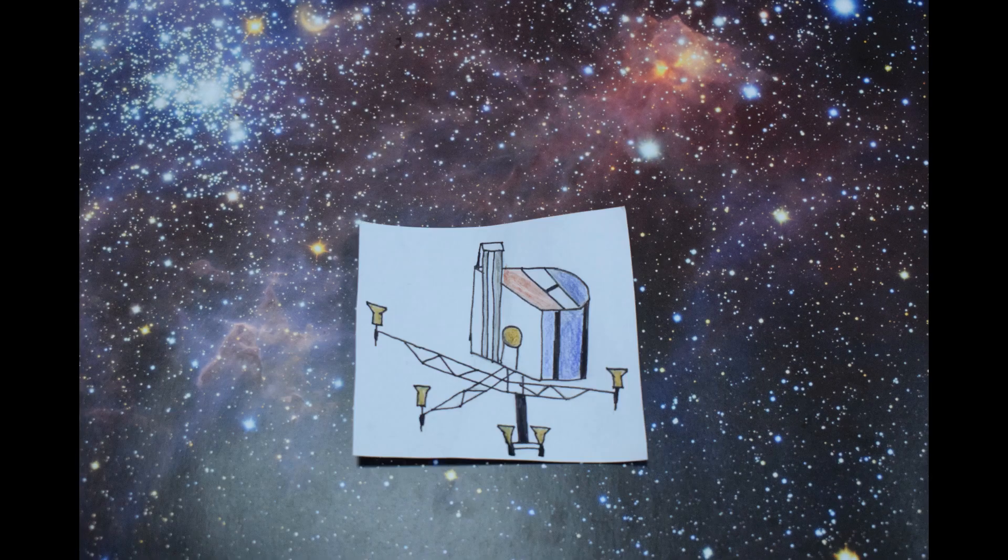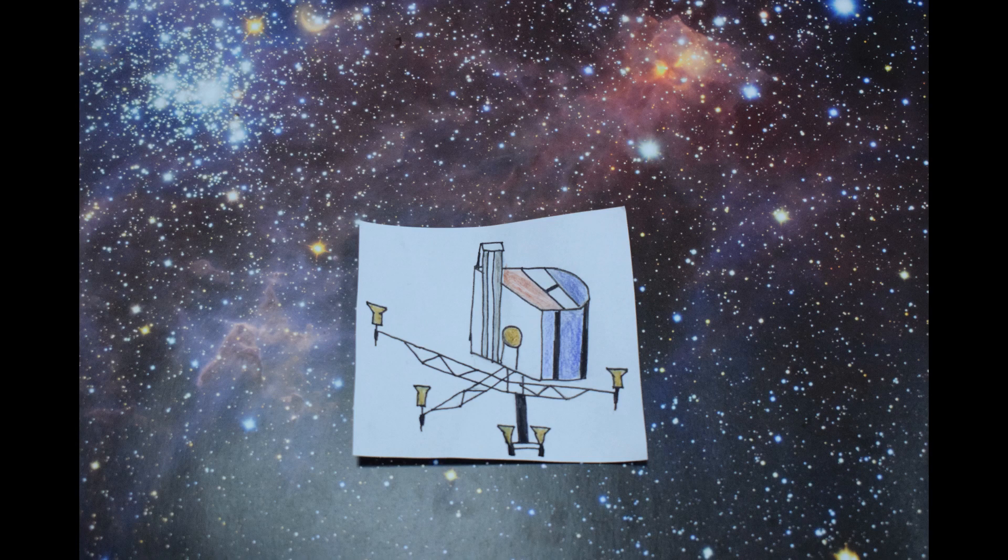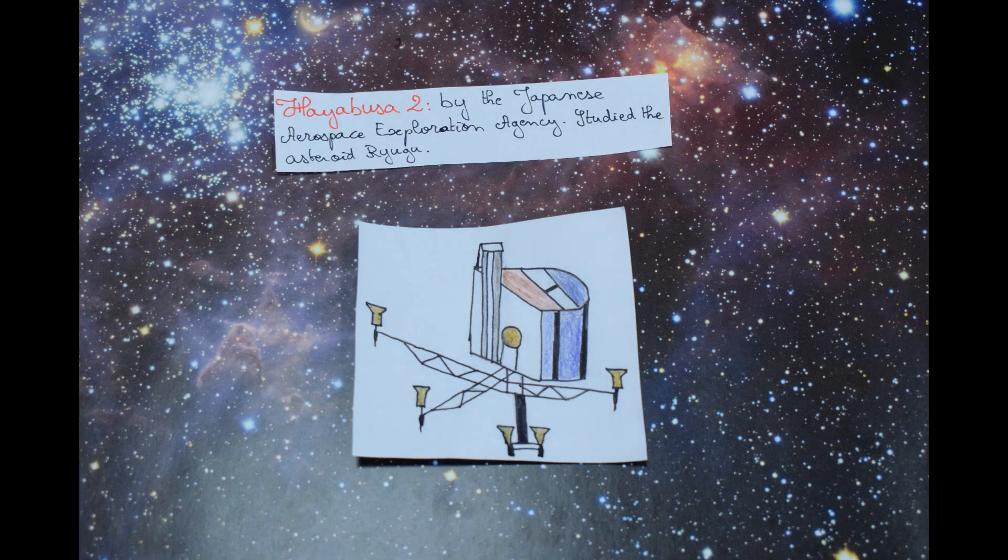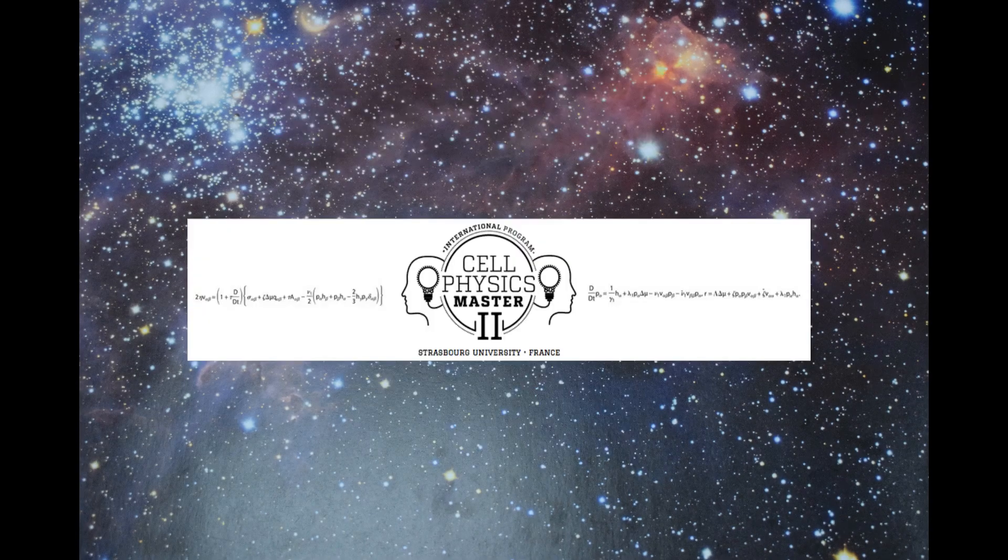Therefore, other missions such as Rosetta can help to find out a little more. This is the case of Hayabusa2, sent to study the asteroid Ryugu and whose samples were returned to Earth in December 2020.